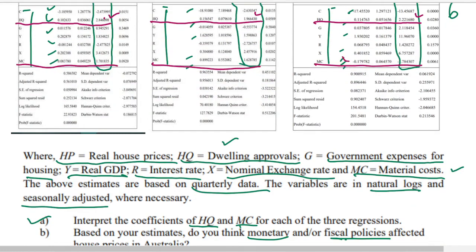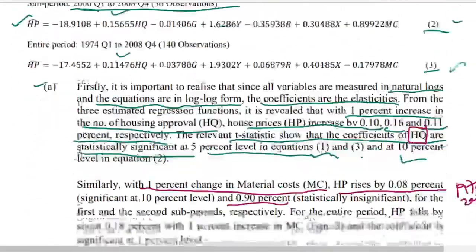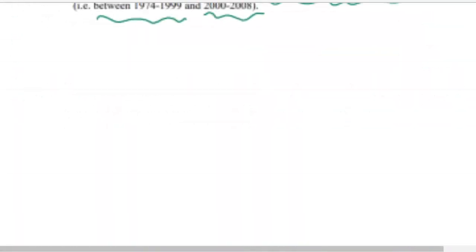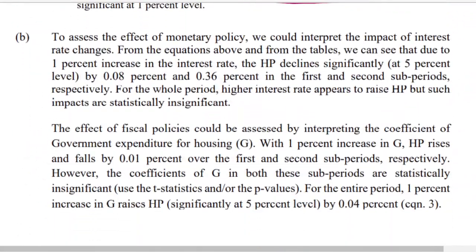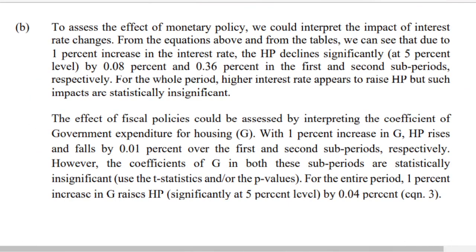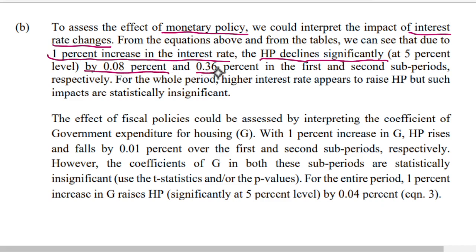For question B — whether monetary and fiscal policies affected house prices — you need to identify the relevant instruments. Monetary policy is reflected through the interest rate (R). If there is a one percent increase in the interest rate, household prices decline significantly by 0.08 percent and 0.36 percent in the first and second sub-periods respectively.